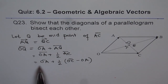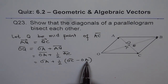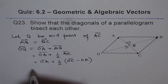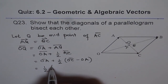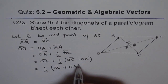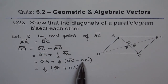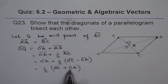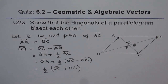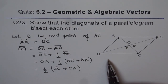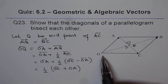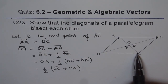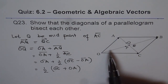If you do your math, OA minus half of OA gives you half OA. So we can write this as half of OC plus OA. So we have proved that OQ is actually half of OC plus OA. That is what we have proved.